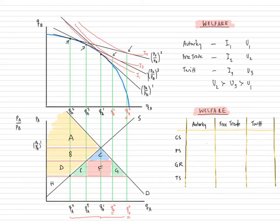With autarky, consumer surplus is the area below the demand curve above the price consumers pay, so consumer surplus is just A. Producer surplus is the area above the supply curve below the price producers receive, so producer surplus is B + D + H. With no trade and no tariff, there is no government revenue, and therefore total surplus is A + B + D + H.